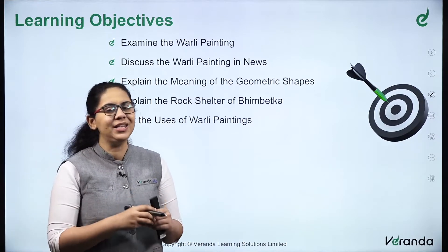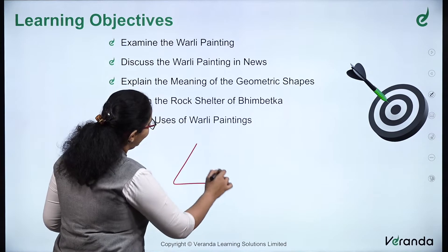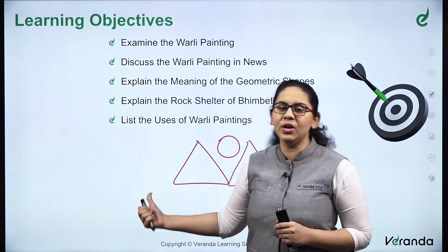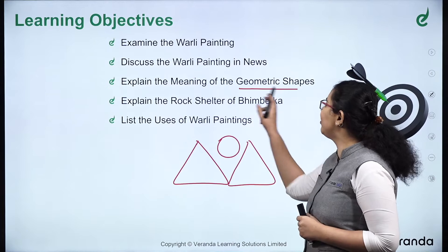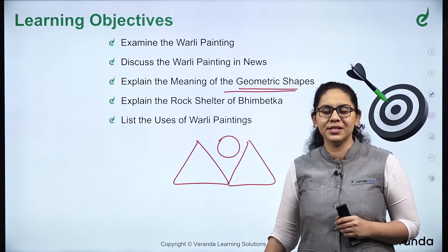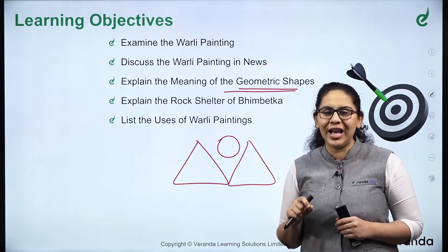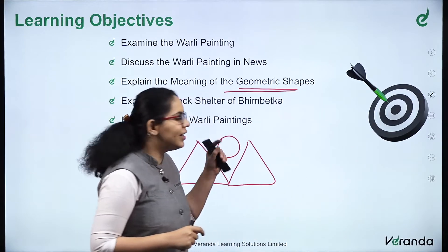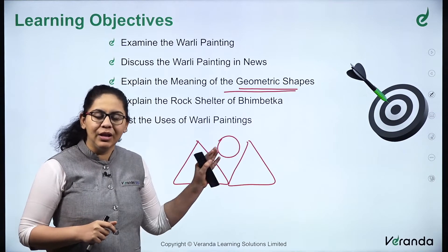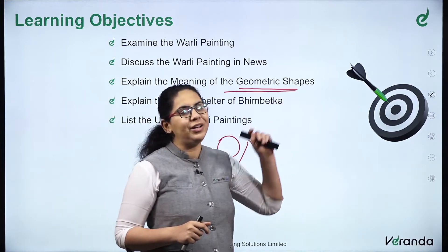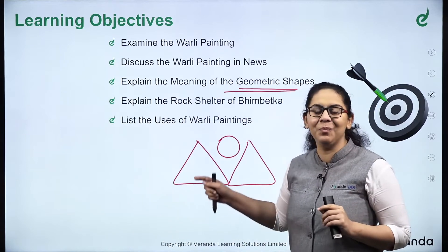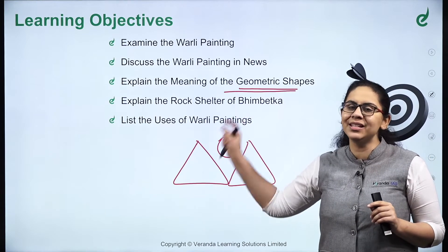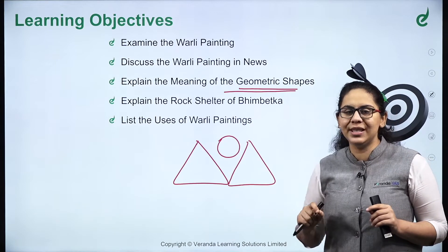All of you might have made some drawings in your childhood which include mountains drawn as triangles, and the sun or moon drawn as circles. These are geometric shapes used in Varli paintings — the triangle which we used for making mountains, the circle for depicting the sun or the moon. We were unaware of these terms at that time, but today we know: that shape is a triangle, that is a circle. Varli painting uses these geometric shapes.